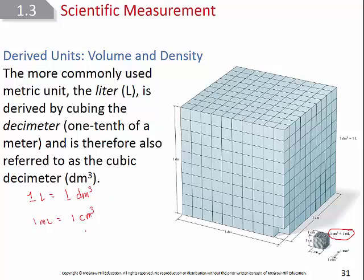These units are used interchangeably. If you've worked in the medical field, you may have seen the unit 'cc' — cubic centimeters. For example, a patient might need 10 cc's of a drug. CC stands for cubic centimeters. So a cc, a cubic centimeter, and a milliliter are all exactly the same unit.